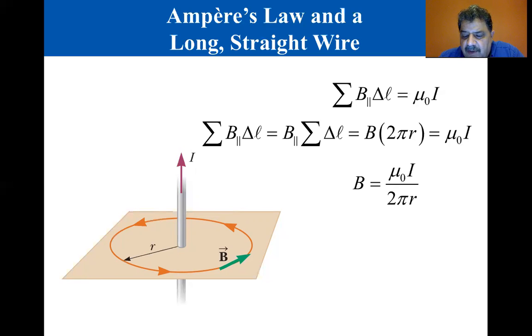Note that Ampère's law in this form is valid only when the currents and fields don't change with time, so direct current circuits. This ends this section. The main point here is B is equal to mu zero I divided by 2 pi R. This ends this section on Ampère's law. The next section is 19.8 magnetic force between two parallel wires.